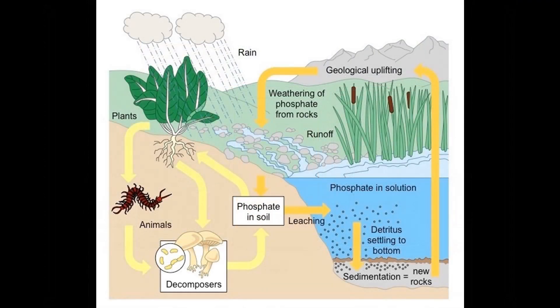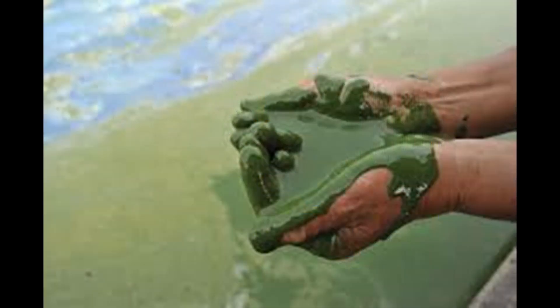Phosphorus occurs naturally at low levels in water, plants, and animals. It occurs unnaturally in fertilizers used in agriculture, cleaners used in industry, and wastewater from household sewage. We need it to survive in low levels; however, high levels of phosphorus in nature can create algal blooms, causing the premature aging of a body of water.